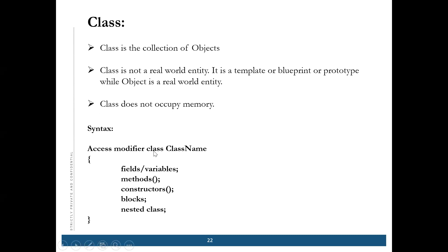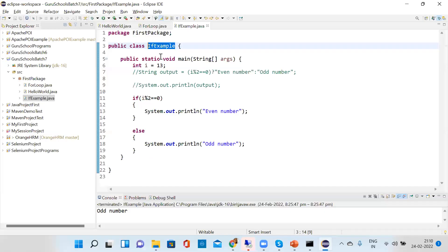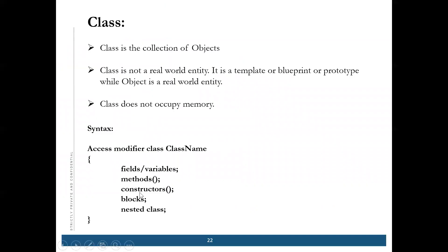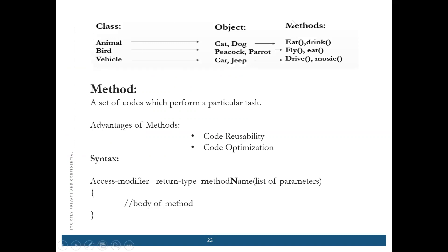The syntax of a class: access modifier (public, private, protected, or default), then the class keyword, then the class name. Inside a class there can be variables, methods, constructors, blocks, and nested classes. By convention, class names start with a capital letter — for example, IfExample or ForLoop. This is a naming convention rule.